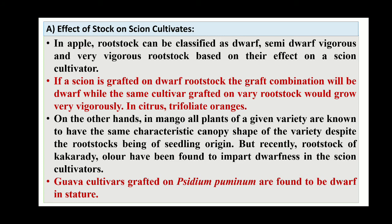On the other hand, in mango, all the plants of a given variety are known to have the same characteristics — canopy shape of the variety — despite the rootstock being of seedling origin. But recently, rootstock of the Olour variety have been found to impart dwarfness in the scion cultivars. Guava cultivars grafted on Psidium pumilum are found to be dwarf in stature.